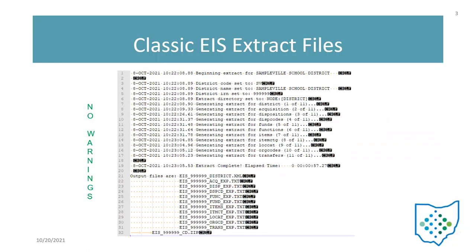This is what the extract log looks like. One of the steps in the migration is to run the extract. That's going to go out there and pull specific information out of inventory and classic into TXT and XML files that will then be imported into Redesign. As you can see here, it's going out there for Sampleville district, making sure the IRN is set, and then it's going to do these extractions.